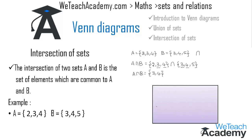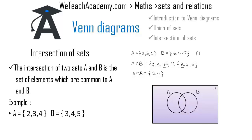Now let us represent the intersection in the form of a Venn diagram. We have a rectangle for the universal set and we draw two overlapping circles representing set A and set B. The common overlapping portion represents the intersection, where we write 3 and 4. The remaining element of A is 2, written in A's exclusive region, and the remaining element of B is 5, written in B's exclusive region.